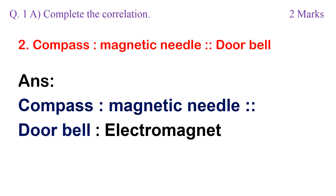2. Compass uses a magnetic needle, then doorbell uses? Answer: Compass uses a magnetic needle, then doorbell uses an electromagnet.